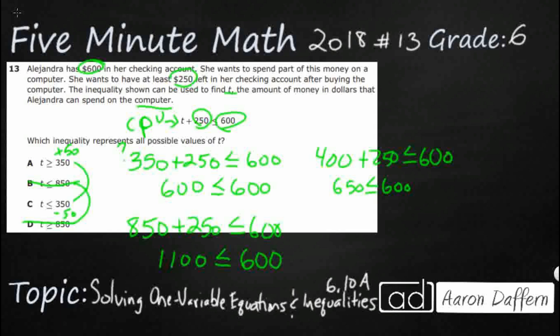So let's try $350 minus $50. We're going to get $300. Let's get a little bit smaller. $300 plus $250 is less than or equal to $600. So that's going to be $550 is less than or equal to $600. That looks like it's going to work. So it looks like our answer is going to be C.